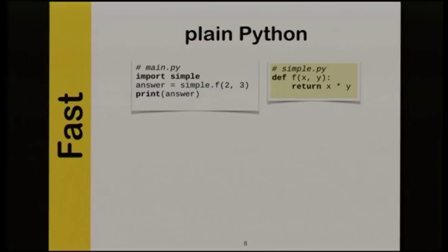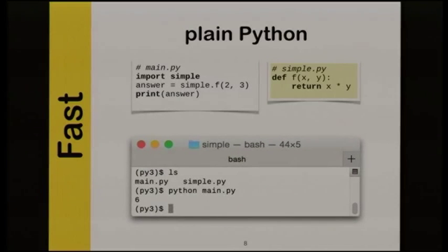We're going to begin extremely simply — there's no complexity here whatsoever. There's a main file and a simple.py module. We import the simple.py module and run the function inside it. It takes two arguments and multiplies them together. Nothing strange whatsoever — everyone in the room should be very comfortable with this. In the terminal, we run 'python main.py' and it prints the answer six.